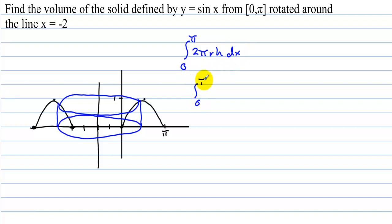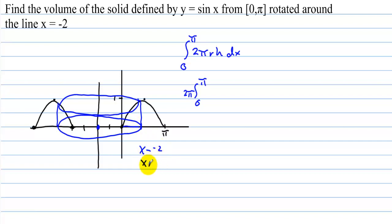There is one cylinder. We want the integral from 0 to π of 2πrh dx. The radius goes from x equals negative 2 to the arbitrary x value. We can always find distance by taking right minus left: x minus negative 2, which equals x plus 2. So the radius is x plus 2, and the height of the cylinder is sine of x.